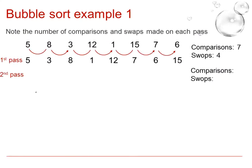Let's look at the second pass then. Comparing the 5 with the 3, that will be a swap. Comparing the 5 with the 8, however, will not be a swap. Comparing the 8 with the 12 will not be a swap.